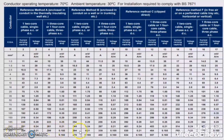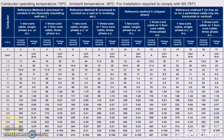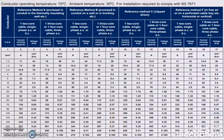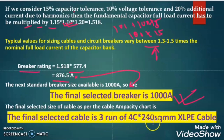We can also go for 3 runs of 300 sq mm since the current ampacity of 3 runs of 300 sq mm is also greater than 1000A. However, the ampacity chart is prepared at standard conditions of 30°C ambient and 70°C conductor temperature. In practical situations, the ambient temperature may be higher, so it is safer to use a higher cable size. The final cable size selected is 3 runs of 4-core 240 sq mm XLPE cable.